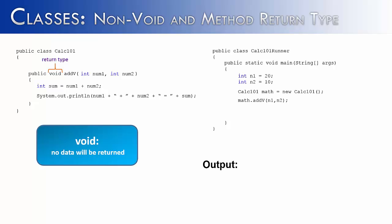What that means is that no data will be returned to where the method was originally called — and in this case, that's the main method. So if we were to run this program, it would print out 20 plus 10 equals 30. That would all happen inside of the method, and nothing would be brought back to the main method.